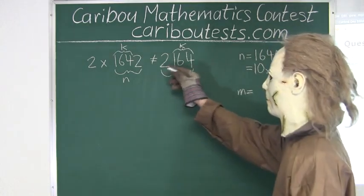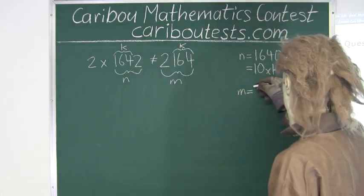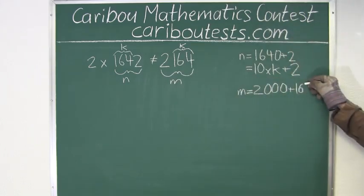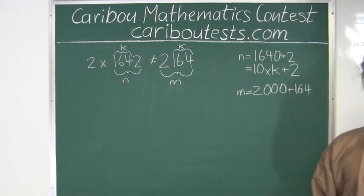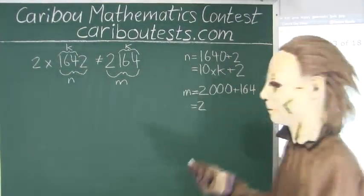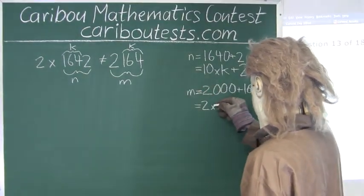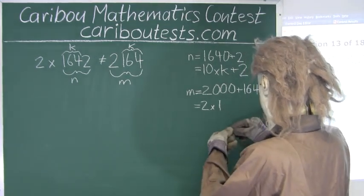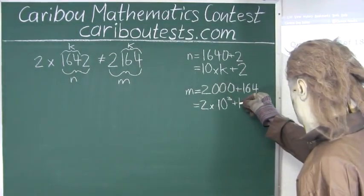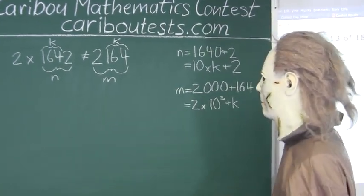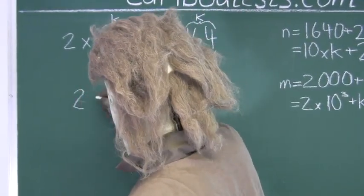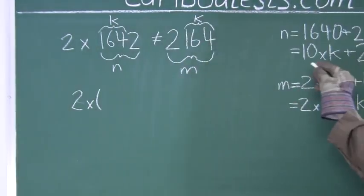Now let's express m in terms of k. So this is like writing 2,000 plus 164. And 2,000 is like writing 2 times 1,000, which is 2 times 10 to the power of 3 plus 164, which is k. Now let's put this into an equation. So we have 2 times 10k plus 2.